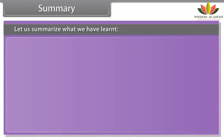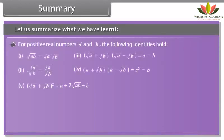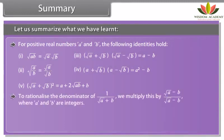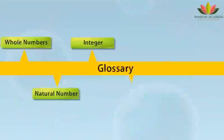Summary. A number is called a rational number if it can be written in the form P/Q, where P and Q are integers and Q is not equal to 0. A number is called an irrational number if it cannot be written in the form P/Q, where P and Q are integers and Q is not equal to 0.